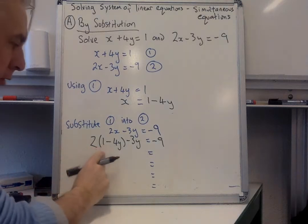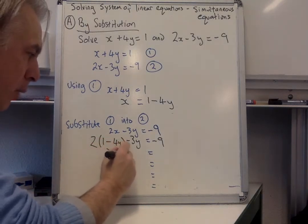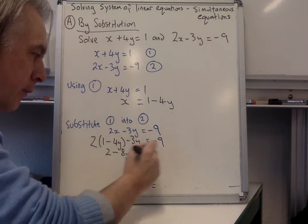OK, so you're back to check, so we do this, 2 times, you get minus 8y, you get minus 3y, it's minus 9.